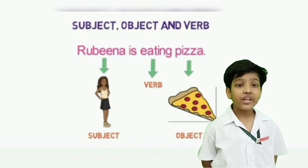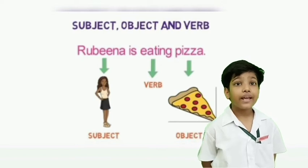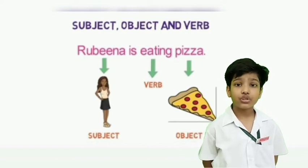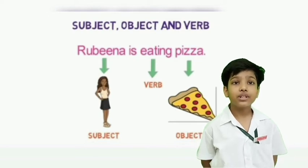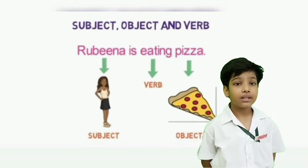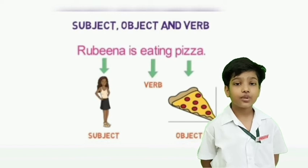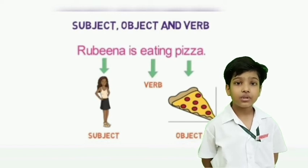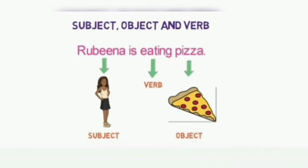To identify any object, we ask a 'what' or 'whom' question. In this sentence, we ask the 'what' question: What is Rubina eating? The answer is Rubina is eating a pizza. Now we are clear with the subject, object and verb. Let's come to the main topic which is transitive and intransitive verb.